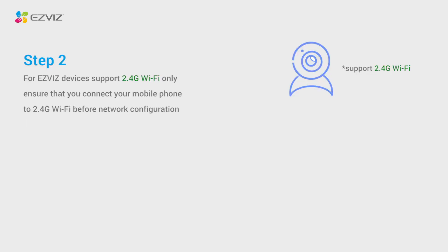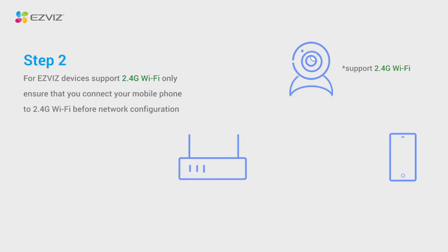Step 2: EasyViz devices support 2.4G Wi-Fi only. Ensure that you connect your mobile phone to a 2.4G Wi-Fi network before starting network configuration.